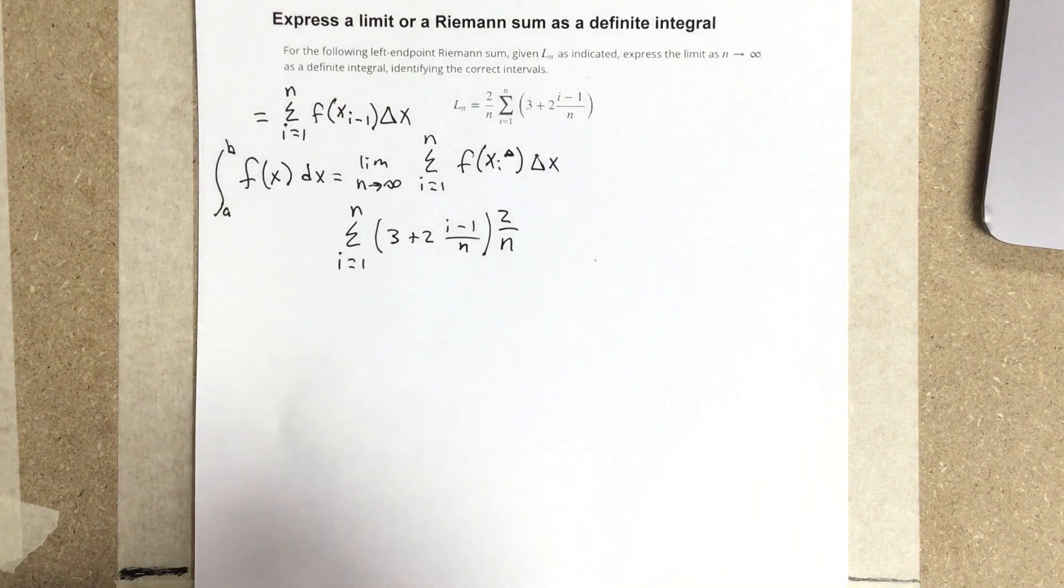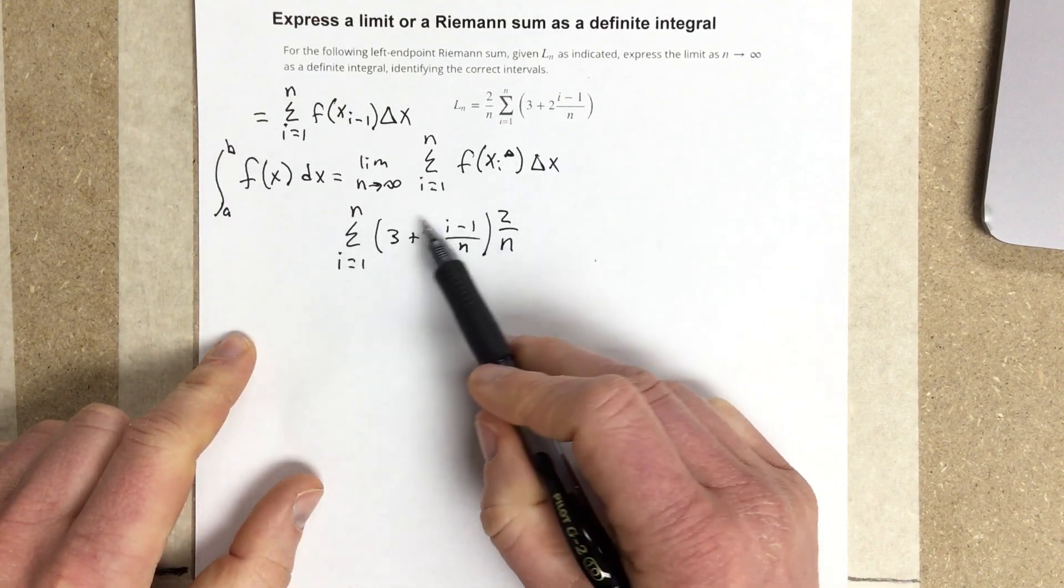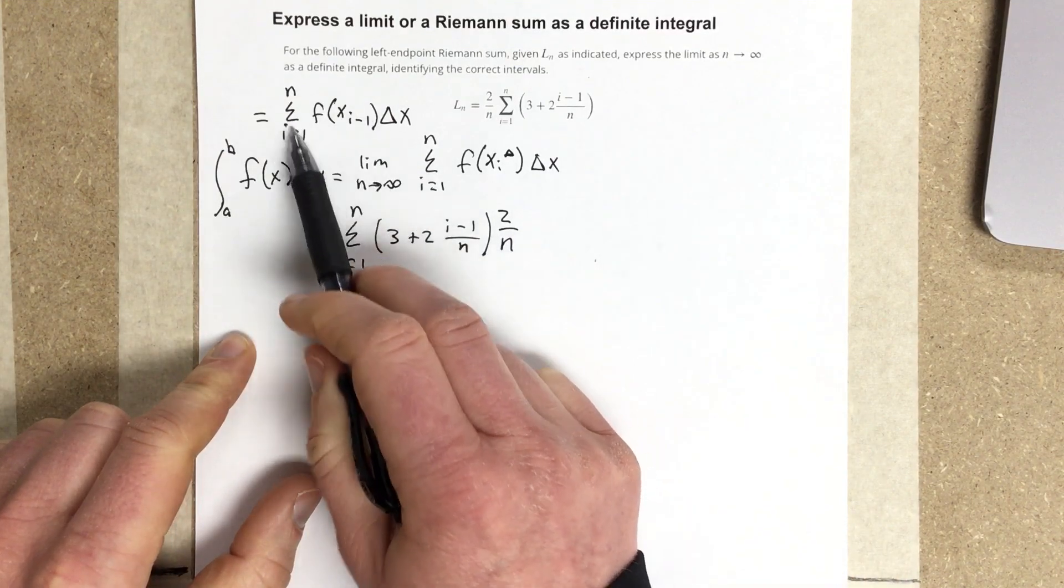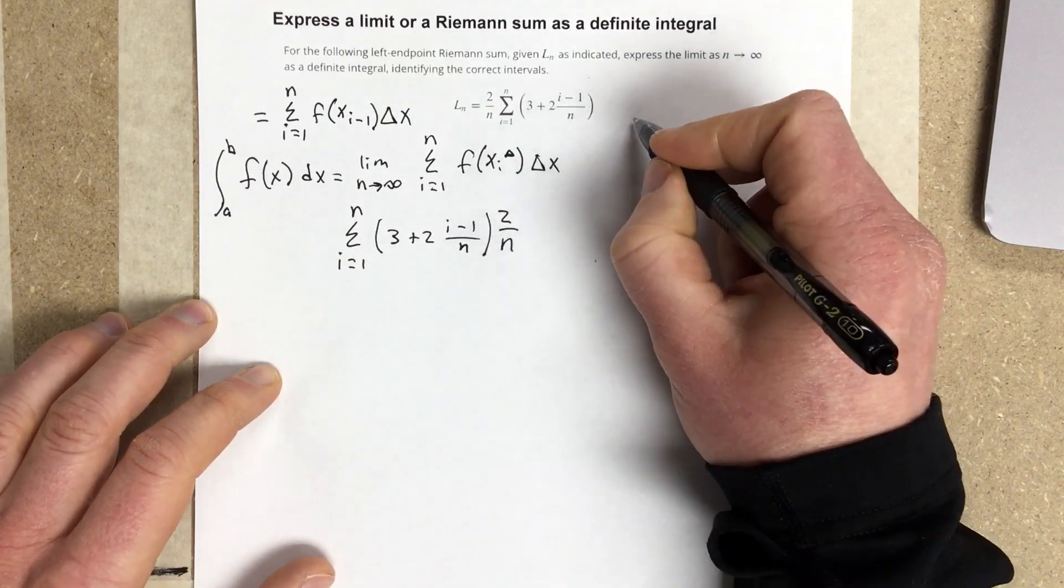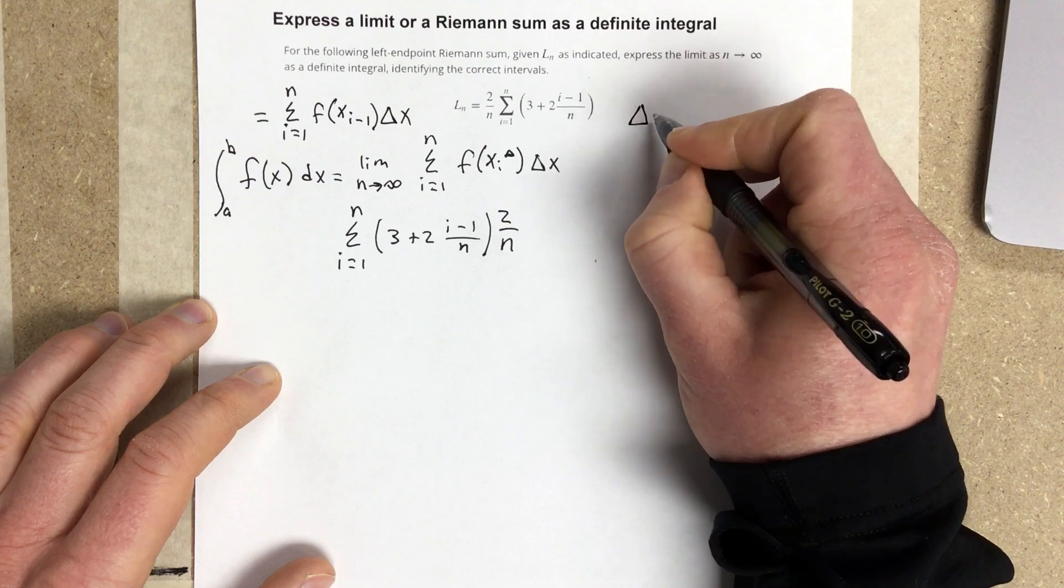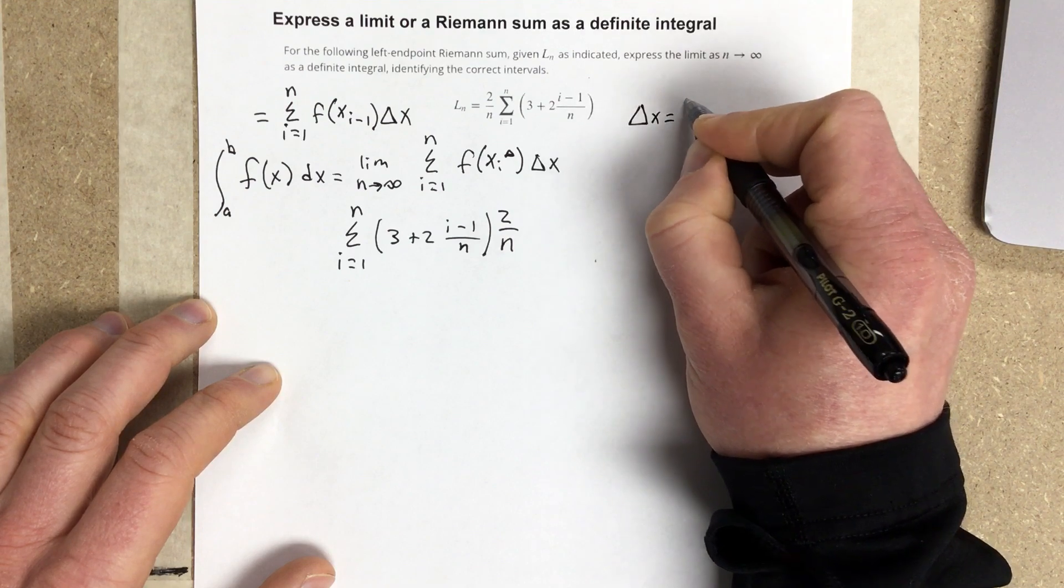We've got 2 divided by n here. So, that really tells us now, if we compare this piece with our original piece here, that change of x is 2 over n. So, we're going to say that change of x is equal to 2 over n.